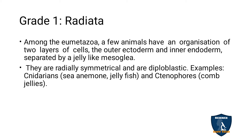The two layers are the ectoderm and endoderm — outer ectoderm and inner endoderm. These two layers are separated by a jelly-like substance called mesoglia. These animals in Radiata show radial symmetry, meaning you can cut the body into equal halves at any plane.